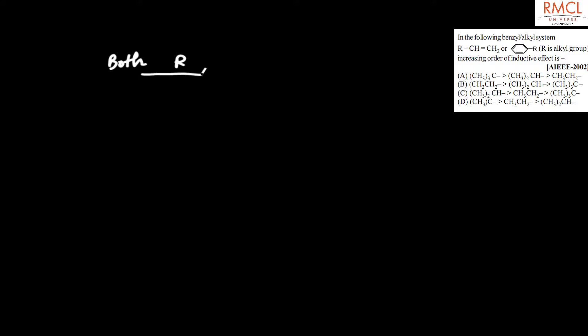The given question was asked in IEEE 2002. The question is about the benzyl alkyl system. In this system, both are attached to a vinyl group, and it is called an allylic system. The increasing order of positive inductive effect is to be determined for this system.